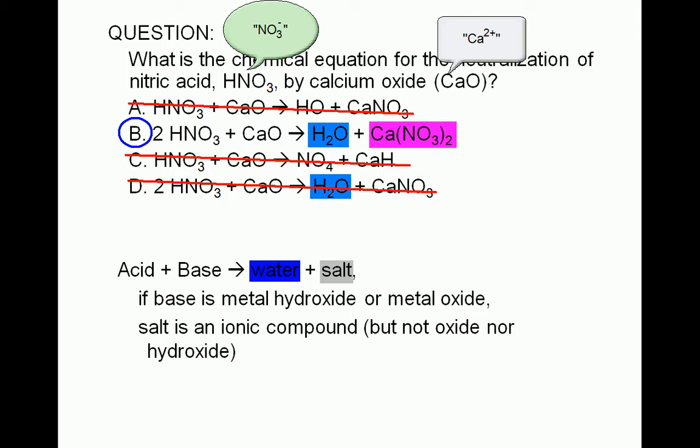Note that if the base is ammonia, the product is simply an ammonium salt. The hydrogen ion from the acid combines with the ammonia molecule to form an ammonium ion.